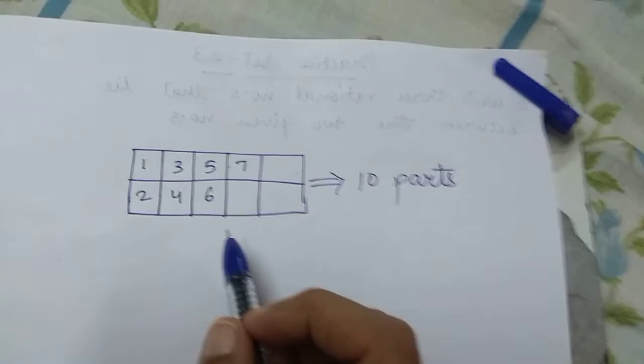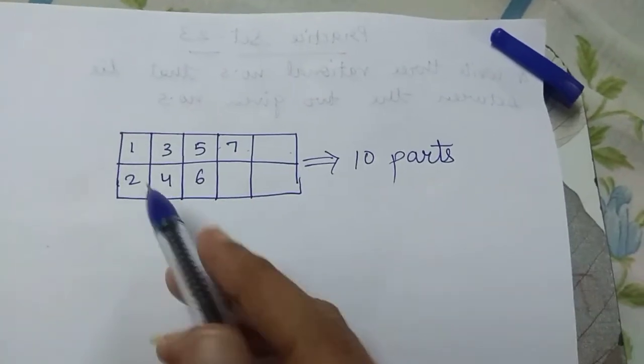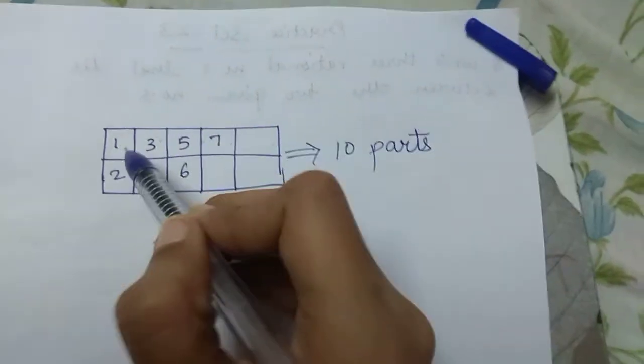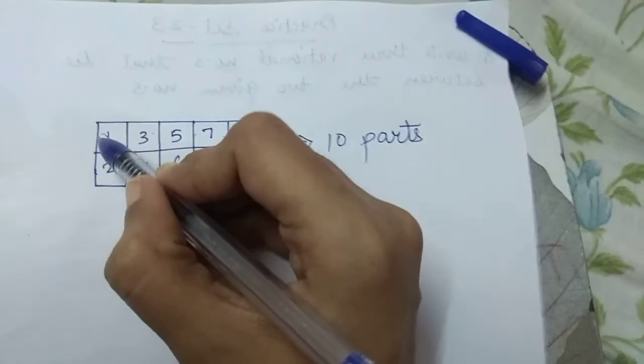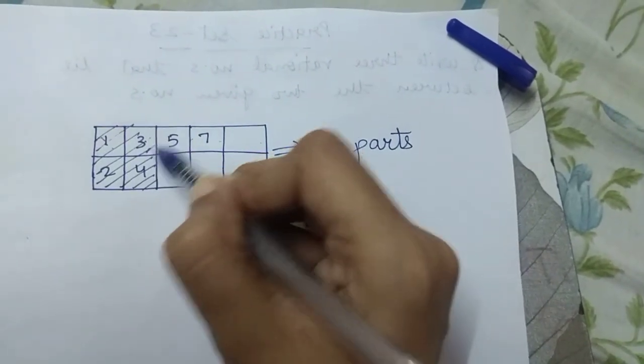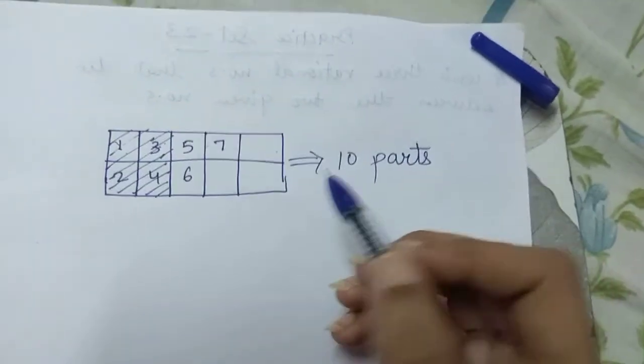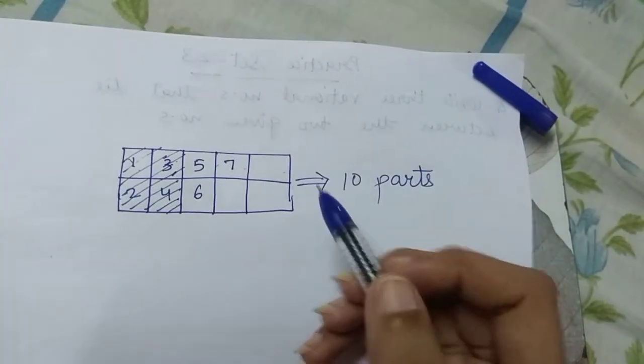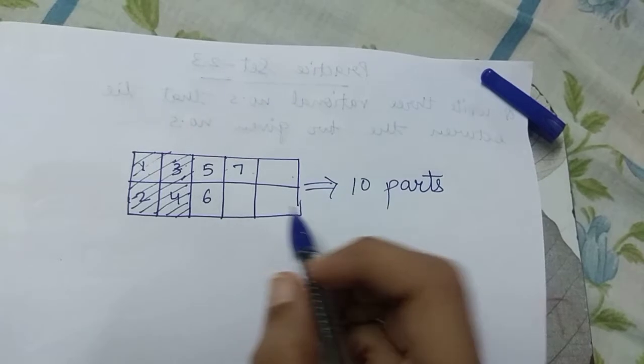But this boy Ramu, he painted only 4 parts. How many parts he painted? Only 4 parts. So I am shading that part. See, 1, 2, 3, 4. These 4 parts he painted.